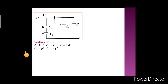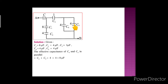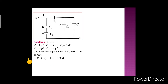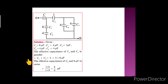The effective capacitance of C4 and C5 — these two capacitors are connected in parallel. So their effective capacitance is the sum: C4 plus C5 equals 4 plus 4 equals 8 microfarad.